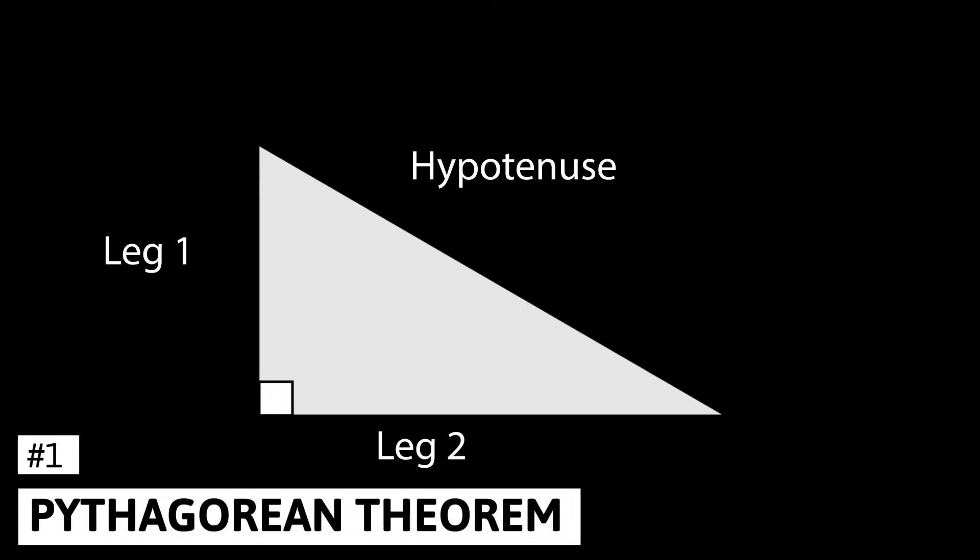Number 1, the Pythagorean Theorem. The Pythagorean Theorem has been used for thousands of years, and there are a variety of believed origins, from Indian mathematicians to Greek philosophers.